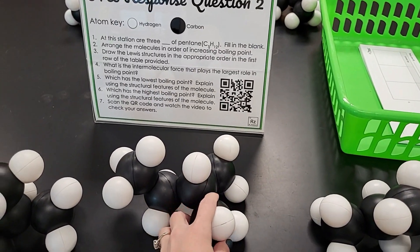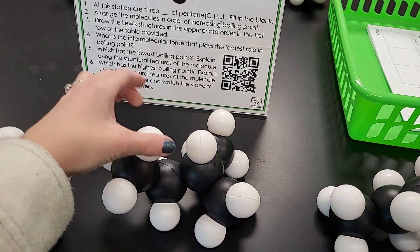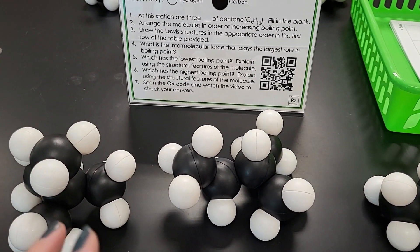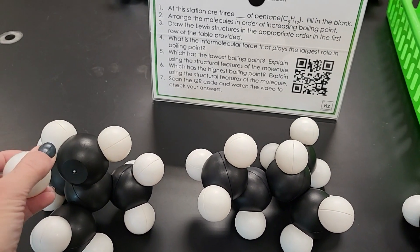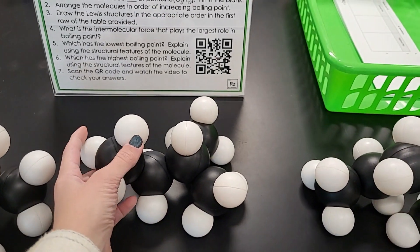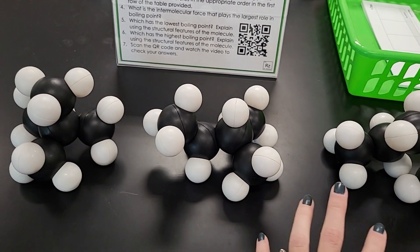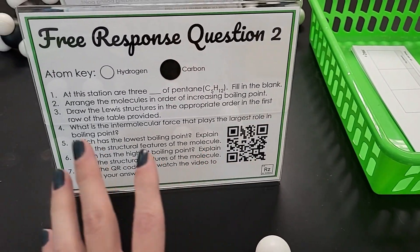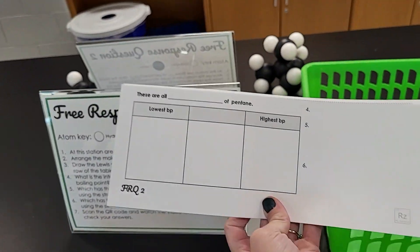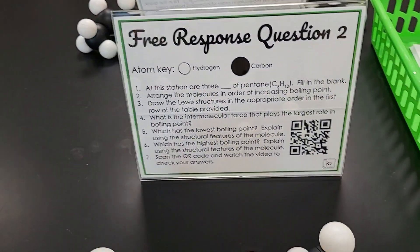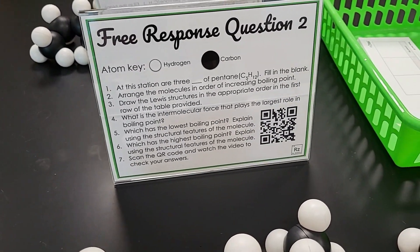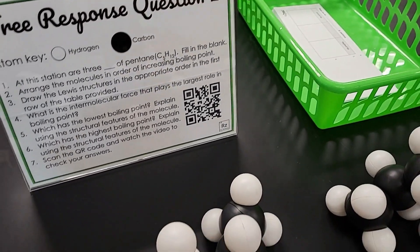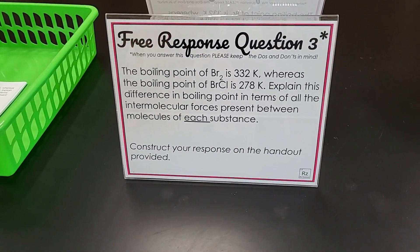The second station uses Snatoms — I absolutely love these. You can hear them snap, which is why they're called Snatoms. I love them because they really show the release of energy when bonds form and that it takes energy to separate them. I wanted students to look at the isomers of pentane and examine those intermolecular forces. There's a QR code linking to a video, and the handout helps them understand how electron clouds interact and how surface area plays a role in intermolecular forces.